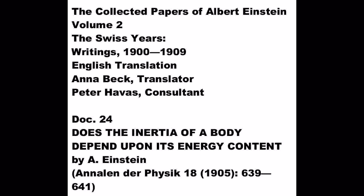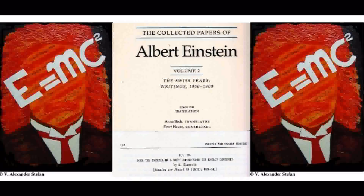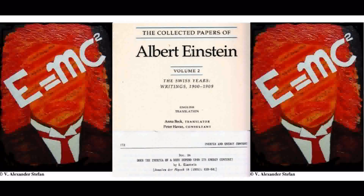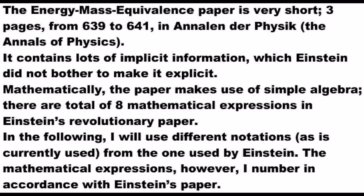Does the inertia of a body depend upon its energy content? Einstein's paper was received by the German journal, the Annals of Physics, on September 27, 1905, and published in the journal on November 21, 1905. The energy-mass equivalence paper is very short — 3 pages, from 639 to 641, in the Annals of Physics.